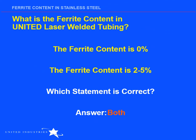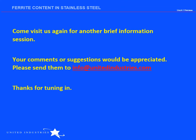Why are both of these statements correct? The actual measured ferrite content of United's laser welded tube is 0% because we use laser welding and solution annealed tubing. The predicted ferrite content based on actual calculated ferrite numbers is typically around 4% — that is the approximate value that will be realized in welds that are not post-weld heat treated, as in field fabrication welds. I hope that you found this presentation informative and useful. I invite you to come back and visit us again for another brief information session at Tech Talks with United Industries. Thanks for viewing.